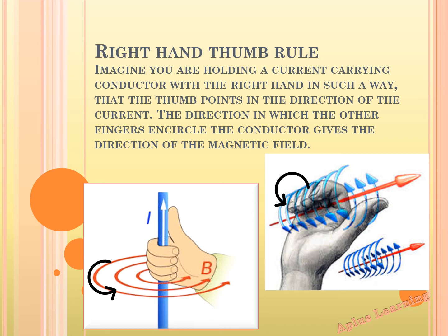Now let's see the right hand thumb rule. Imagine you are holding a current-carrying conductor. Dear kids, you just have to imagine holding it in your right hand — never touch a conductor with an electric flow in it or else you will get a shock. Hold it such that the thumb points in the direction of the current. The direction in which the other fingers encircle the conductor gives the direction of the magnetic field.